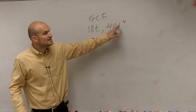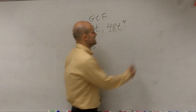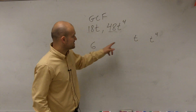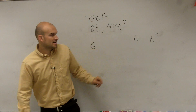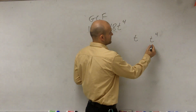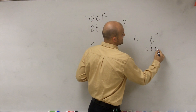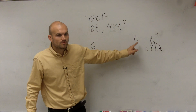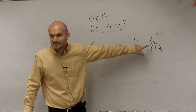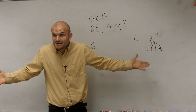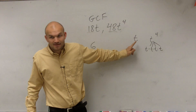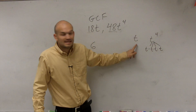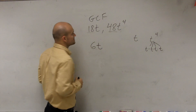Now, how do we find the GCF of t to the fourth and t? Let's look at t and t to the fourth. First of all, is t a prime factor? Yes, right. Is t to the fourth a prime factor? No — that can be written as t times t times t times t. So what is the largest factor common between t and t to the fourth? Just t, because you can only factor t into t; you can't factor anything more than that. So the largest common factor is t, and therefore your final answer is 6t.